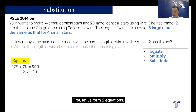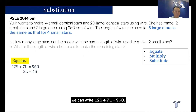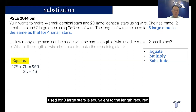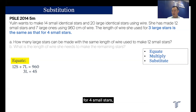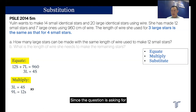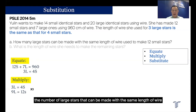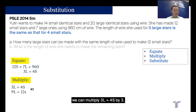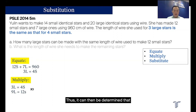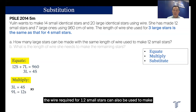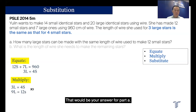First, let us form two equations. Since she has made 12 small and 7 large stars with 960 cm of wire, we can write 12s + 7l = 960. And since the length of wire for 3 large stars is equivalent to the length for 4 small stars, we write 3l = 4s. Next, we multiply. Since the question asks for the number of large stars made with the same wire as 12 small stars, we multiply 3l = 4s by 3, giving us 9l = 12s. Thus, the wire for 12 small stars can also make 9 large stars — that is your answer for part A.